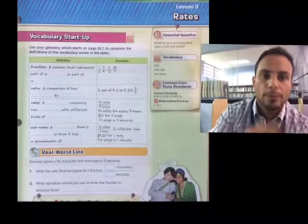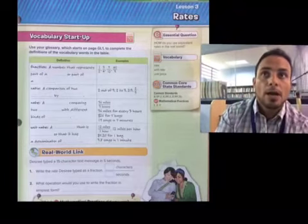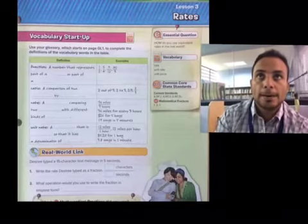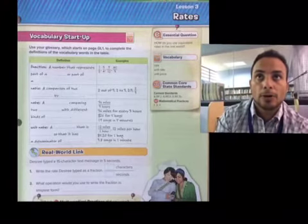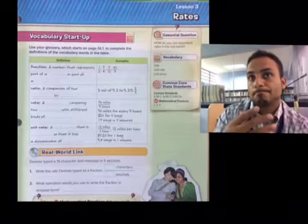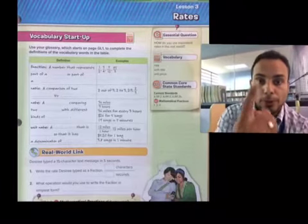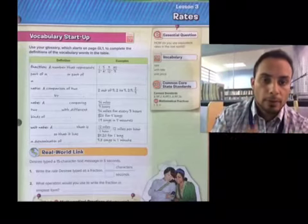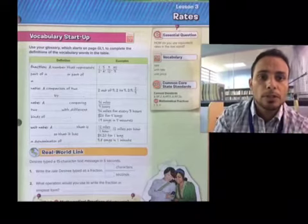How many per one, per one hour? How many miles per hour? How many slices of pizza per person? How many chocolate bars per dollar? We're trying to bring everything down to a one ratio. So let's take a look here.